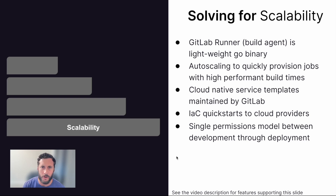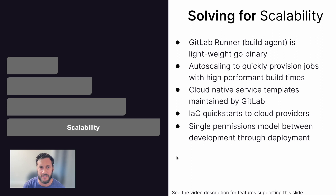The runner has the ability to auto-scale quickly to provision jobs to the nth degree, where we're even seeing organizations with 30,000 developers pushing simultaneously. If you're an organization that has adopted the cloud, there are a wide range of cloud-native service templates to help you build and push to your services. There are also infrastructure-as-code quick starts to help you launch GitLab within your cloud provider to easily maintain your environment going forward with performance and scale in mind.